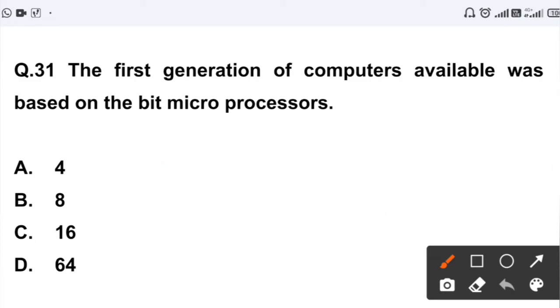Question number 31: The first generation of computers was based on the bit microprocessor. Option A: 4. Option B: 8. Option C: 16. Option D: 64. The first generation of computers was based on the 8-bit microprocessor. So this will be the answer, option B, 8-bit microprocessor.